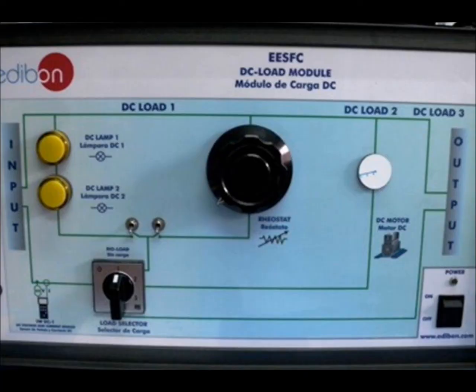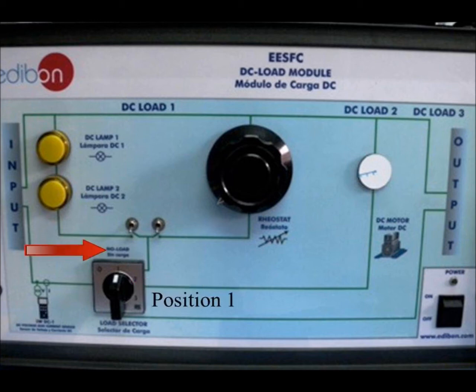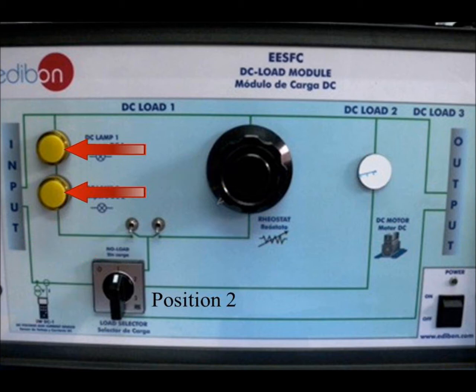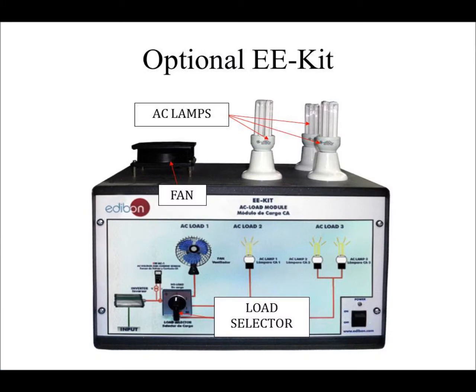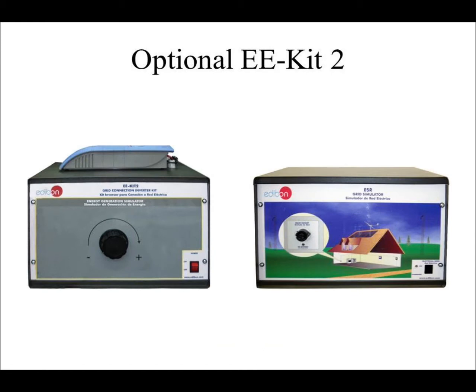Let's take a closer look at the load module box. This is where the load can be changed. The four-position dial allows the system to power no load, two lights in parallel with the rheostat, the lights and rheostat individually, a DC motor, or it can bypass this interface box so that it can be converted to AC.